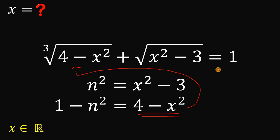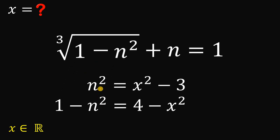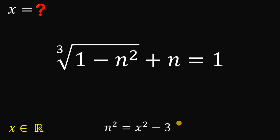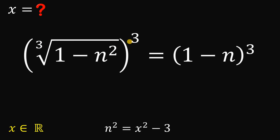Now let's simplify the original equation. Since x squared minus 3 equals n squared, the square root term becomes just n, and 4 minus x squared is equivalent to 1 minus n squared. Subtracting n from both sides gives us cube root of (1 minus n squared) equals 1 minus n. To eliminate the cube root, we cube both sides, since cube root and cube cancel each other.